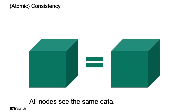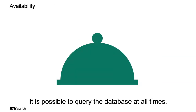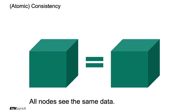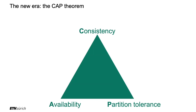Consistency here — also called atomic consistency — means that all nodes see the same data. If you ask any node for an object, they all give you the same answer. Availability means you can query the database at all times — you can stream your favorite series anytime. Partition tolerance means that if the network is cut — for example because of a natural catastrophe like a tsunami cutting undersea cables — and you have what's called a network partition, the system continues to work fine without breaking and collapsing.